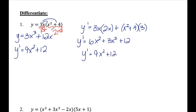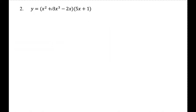So again, in an example like this I wouldn't necessarily use the product rule — the direct method is quicker. But let's look at another example where I'm multiplying two polynomials and I'll want to use the product rule because it will make my life easier. For number two, I could multiply out first and use the power rule, but multiplying a trinomial times a binomial can be kind of lengthy, so instead I'll apply the product rule. The first function is x squared plus 3x cubed minus 2x, and the second is 5x plus 1.